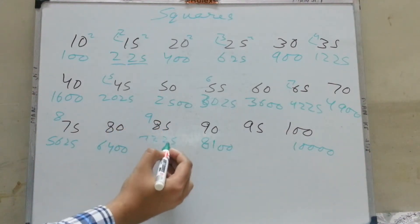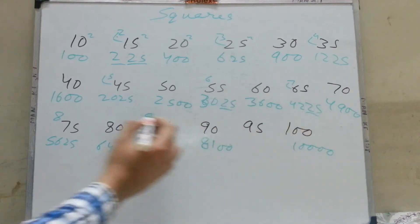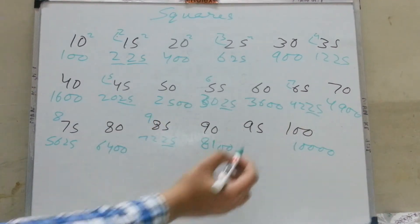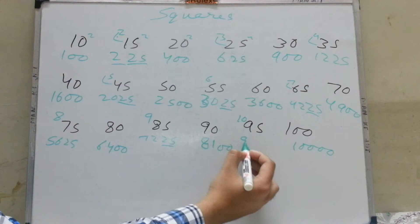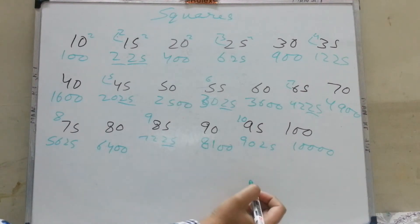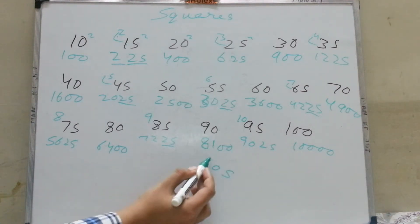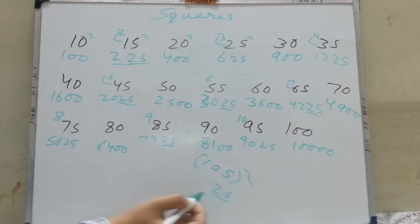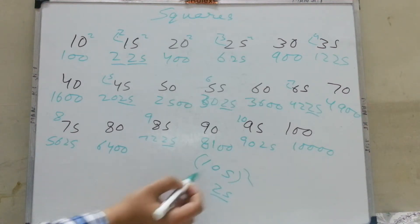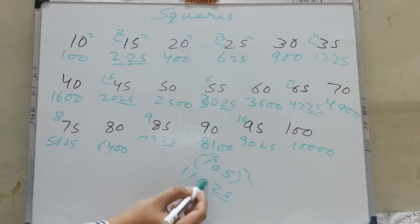The last two digits will always remain 25. For 95 squared, it's 9 times 10 = 90, giving 9025. If you have to do the square of 105, your last two digits will be 25, and you multiply 11 with 10, so the answer is 11025.